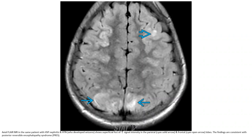MRI in the same patient with HSP, arthritis, and hypertension shows areas of increased signal intensity in the parietal and frontal lobes superficially, with findings consistent with posterior reversible encephalopathy syndrome (PRES).